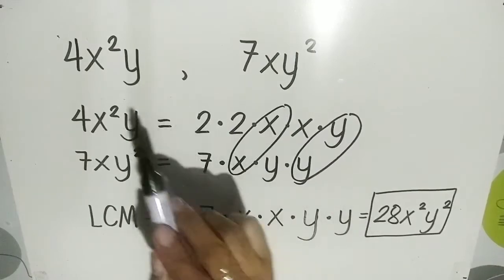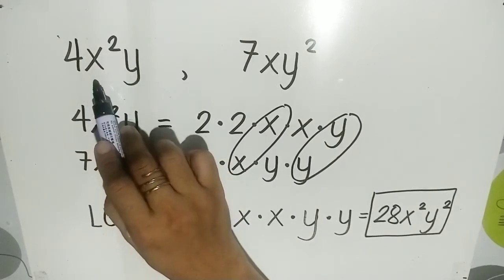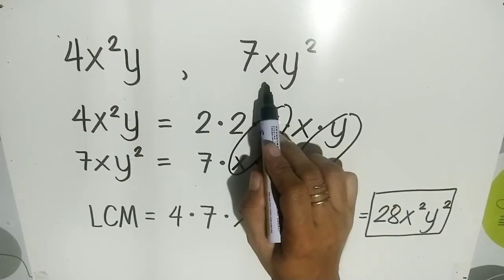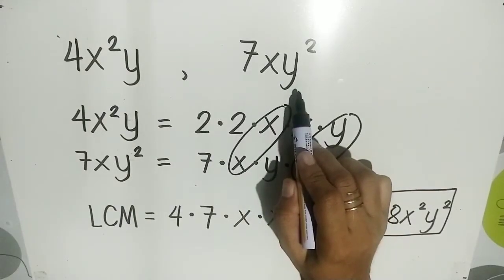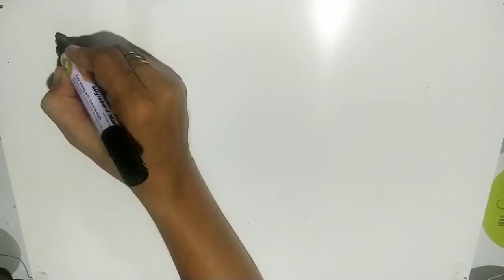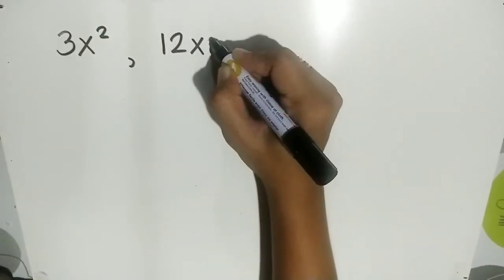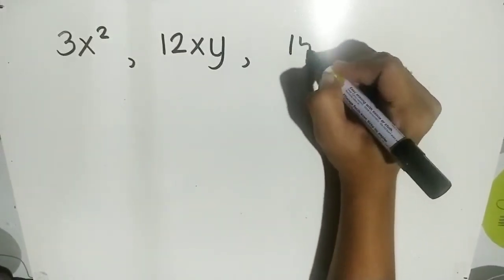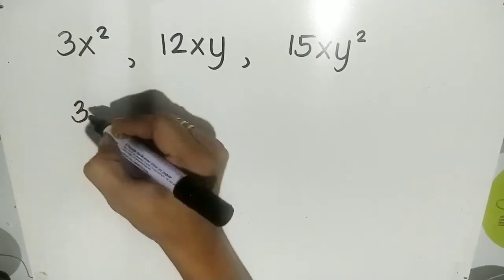Remember: if you are given 2 monomials whose numerical coefficients have no common factor, you can just directly multiply the two numbers. For the variables, just copy the variable with the highest exponent. In x, the highest is x squared; in y, the highest is y squared. What if you are asked to find the LCM of 3 monomials? For example, we have 3x squared, 12xy, and 15xy squared.